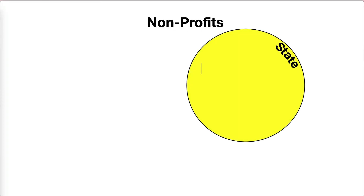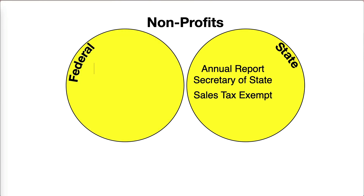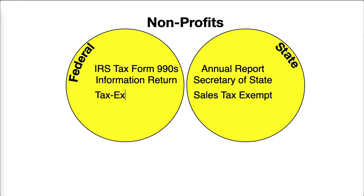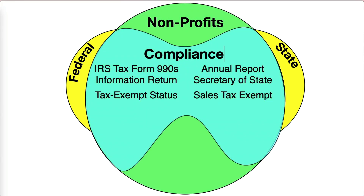To remain compliant, non-profits must adhere to various federal and state regulations. Each state has specific requirements, but many mandate that charitable non-profits file an annual report with the Secretary of State.